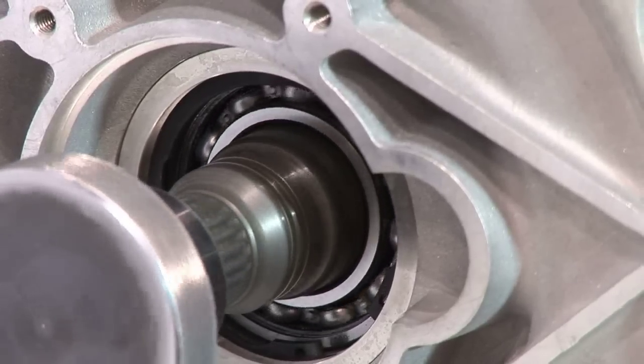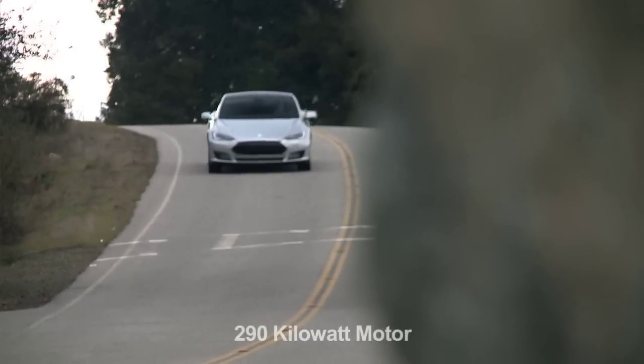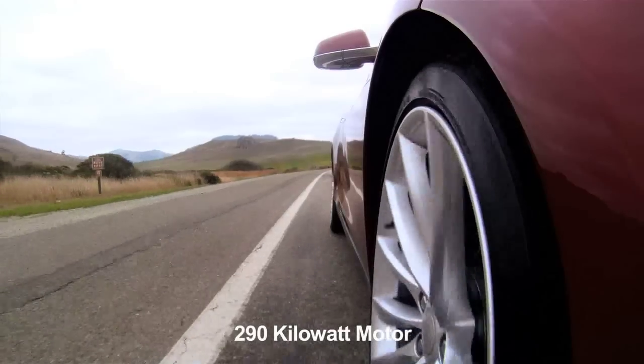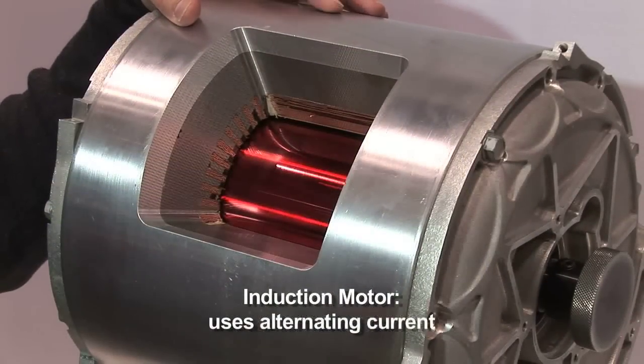The only points of contact in the motor are the bearings. There are no brushes. It's a full brushless AC motor. It puts out 290 kilowatts. It's a four pole, three phase AC induction motor.